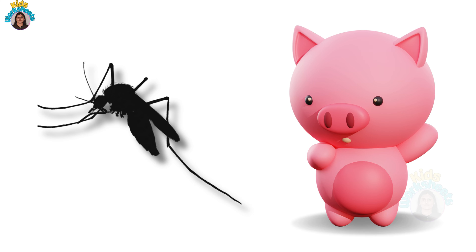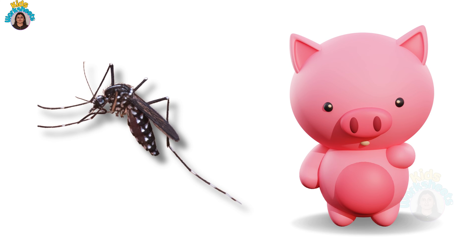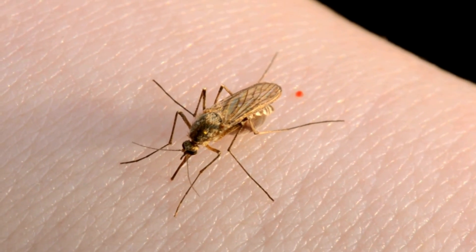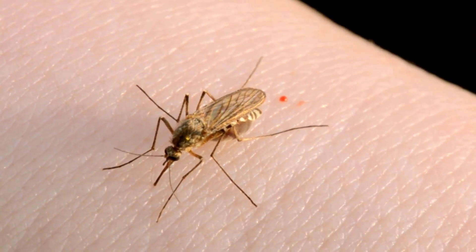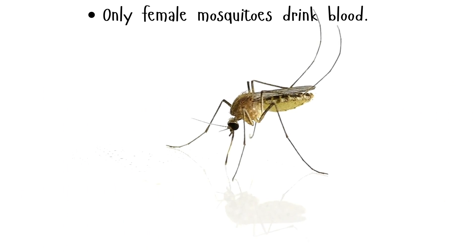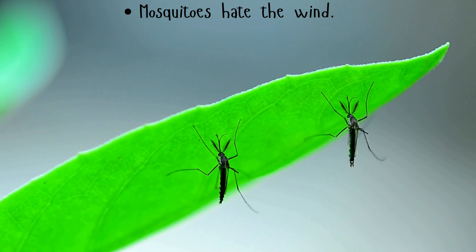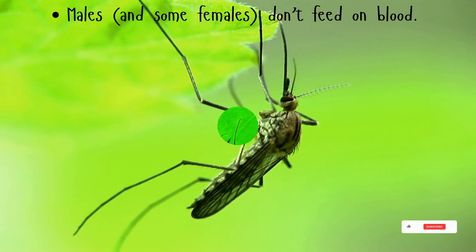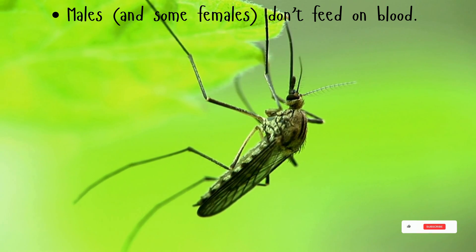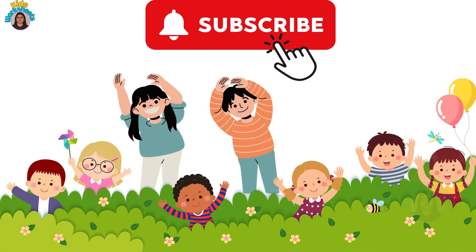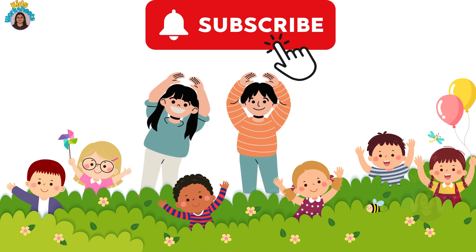Next picture is here — look at the shadow and guess the insect name. This is a mosquito — M, O, S, Q, U, I, T, O — mosquito. Some facts: only female mosquitoes drink blood. Mosquitoes hate the wind. Males and some females don't feed on blood. Well done, children! Thank you so much for listening — hope you enjoyed this video and learned well!